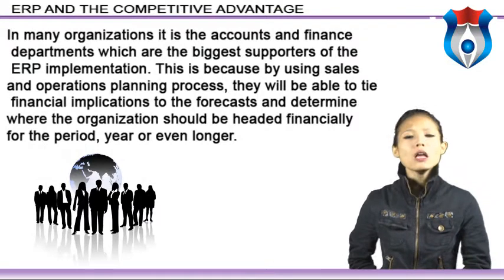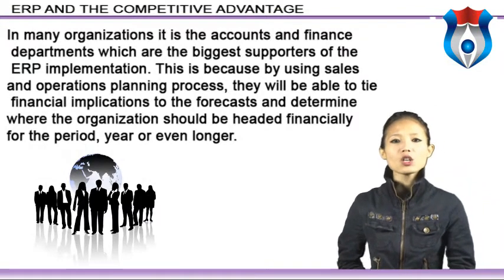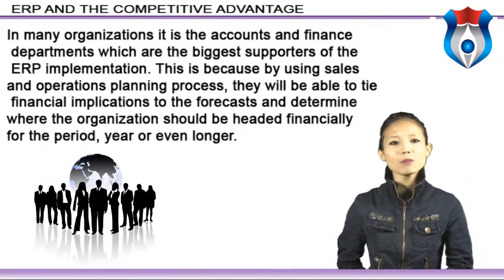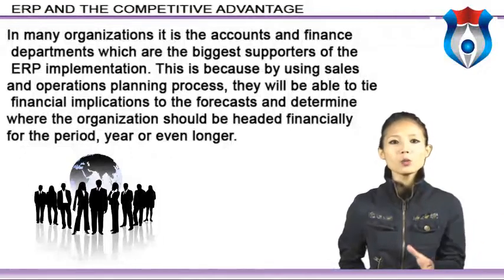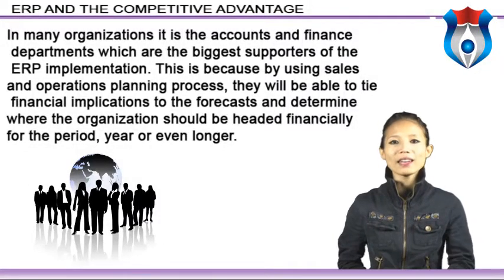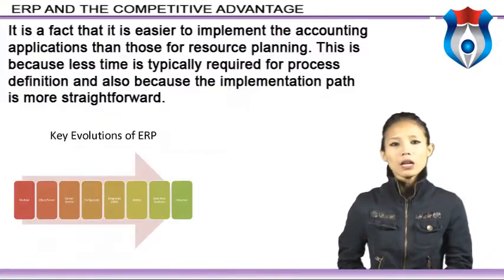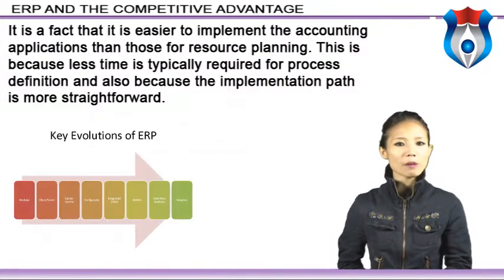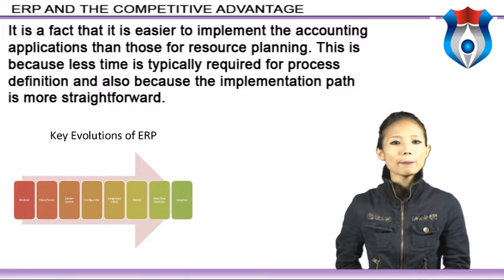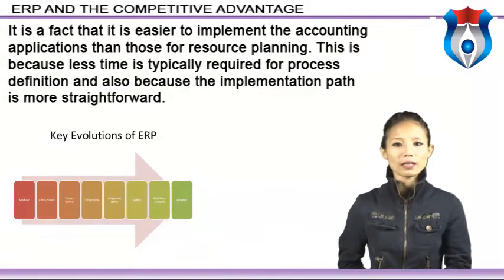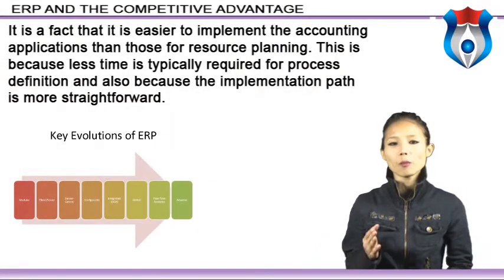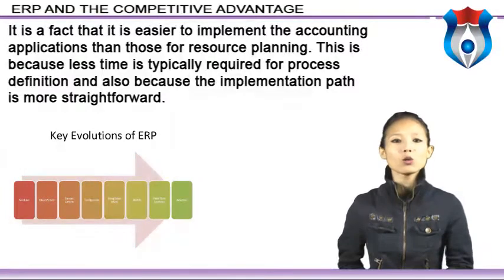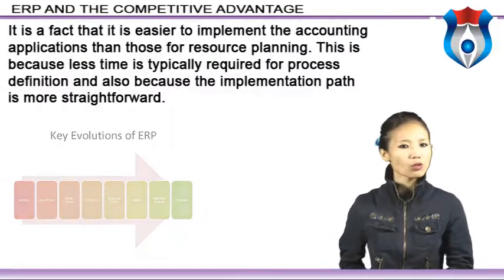For any organization, if one can achieve the sales targets, the departmental budget generally falls in line so that profit goals are met. Use this process to plan for profits, growth, or to manage through a difficult period. It is a fact that it is easier to implement the accounting application than those for resource planning, because less time is typically required for process definition and the implementation path is more straightforward.